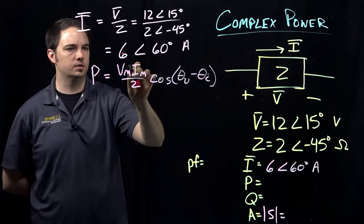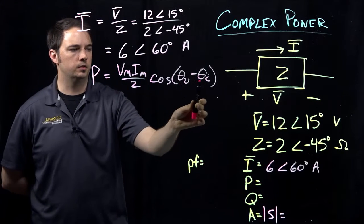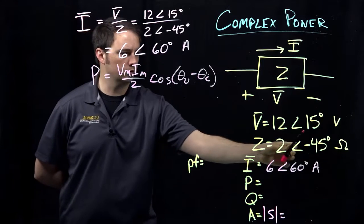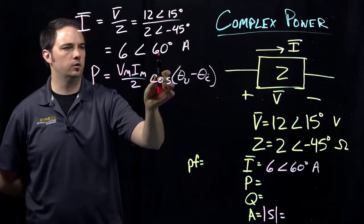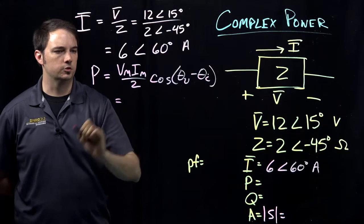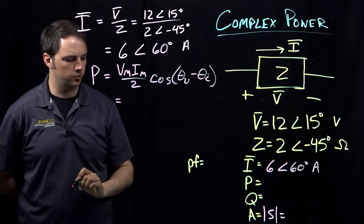The two phase angles are given. The phase of the voltage would be 15 degrees here, phase of the current would be 60 degrees. So here, plugging in each of those quantities for capital P.